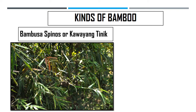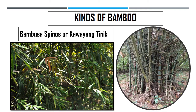This is what Bambusa spinosa looks like. This kind of bamboo is the second highest bamboo, and it may reach a height of 24 to 28 meters, with a diameter of about 8 to 10 centimeters. It is best for building purposes because of its length, and it is also used in making baskets, huts, shuttles, and paper pulp.